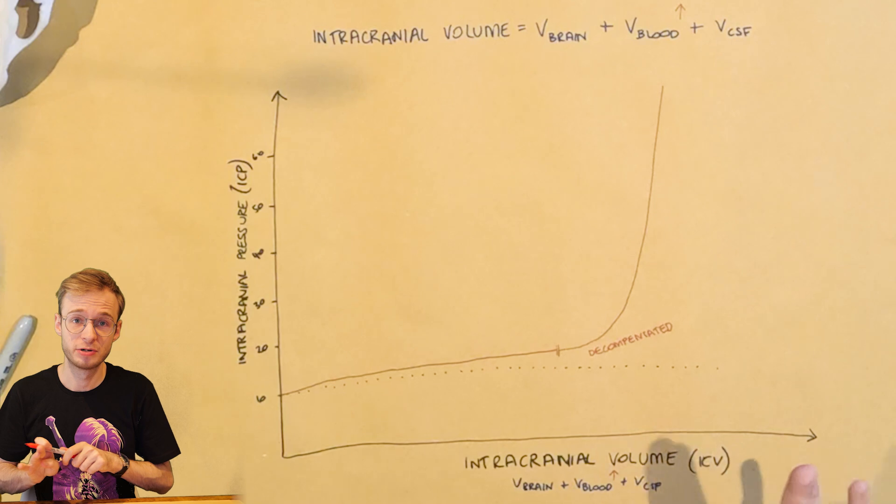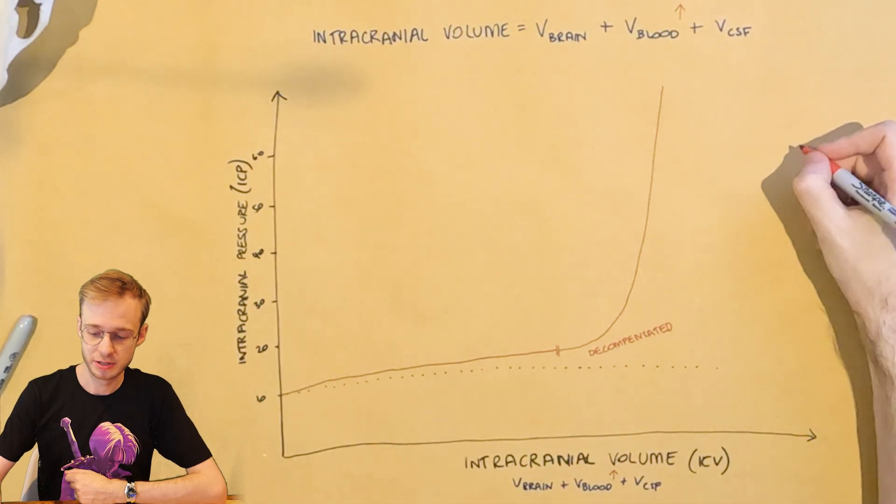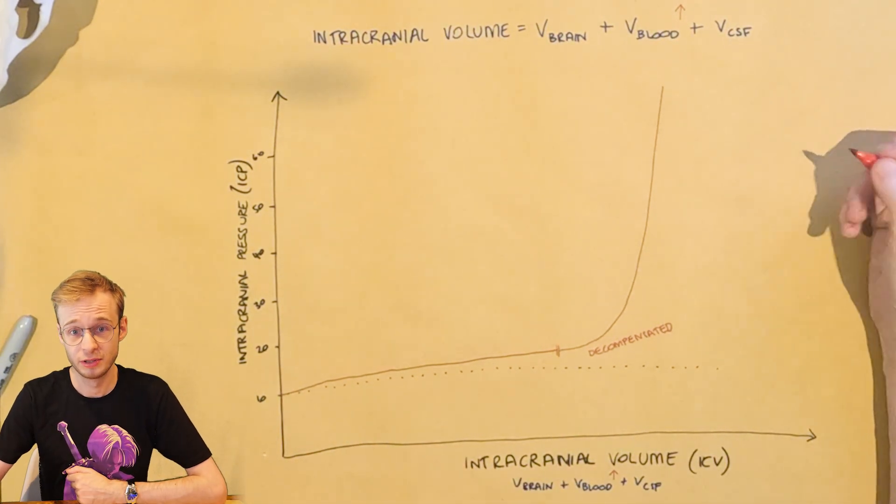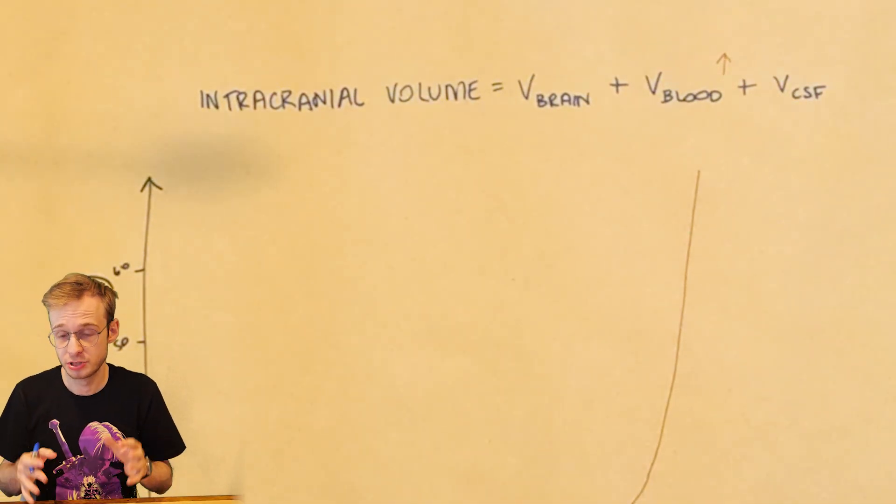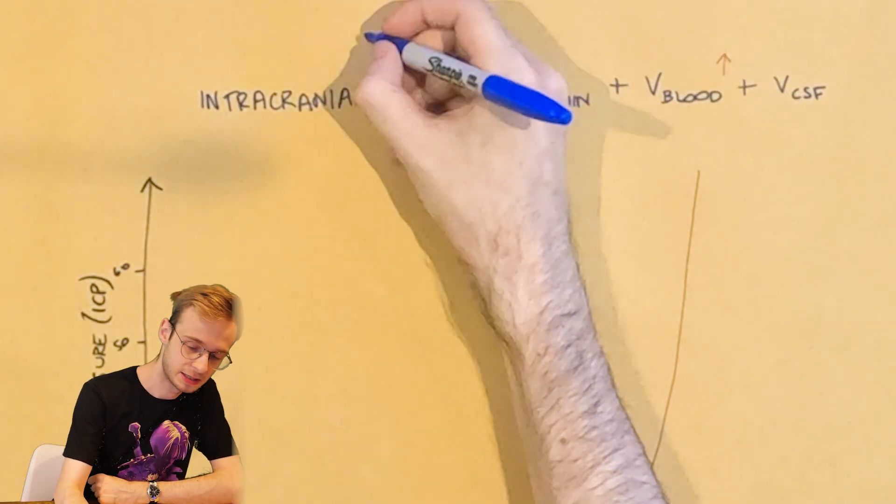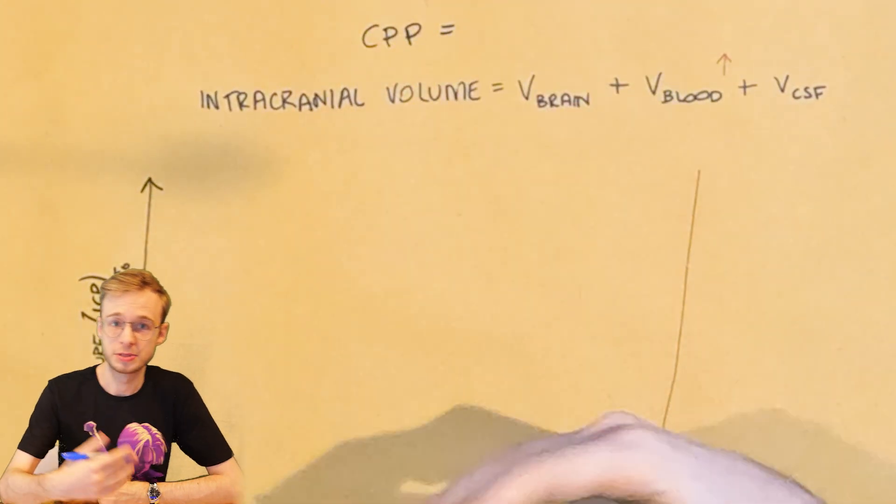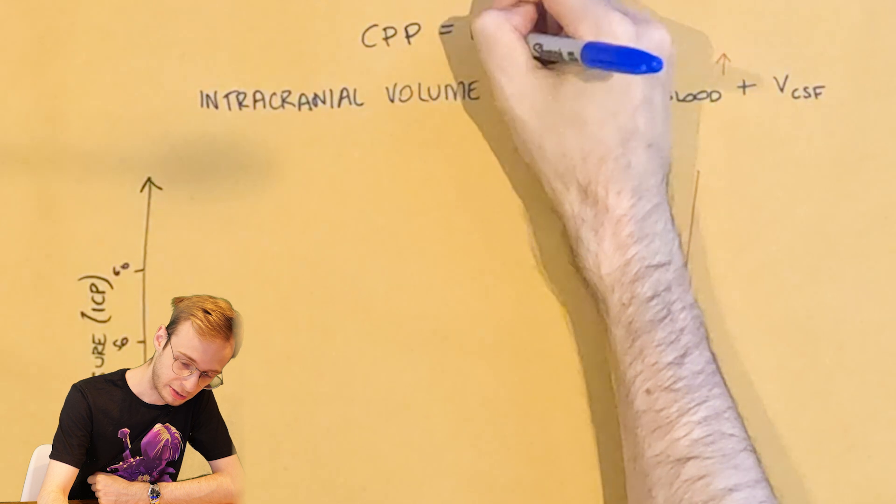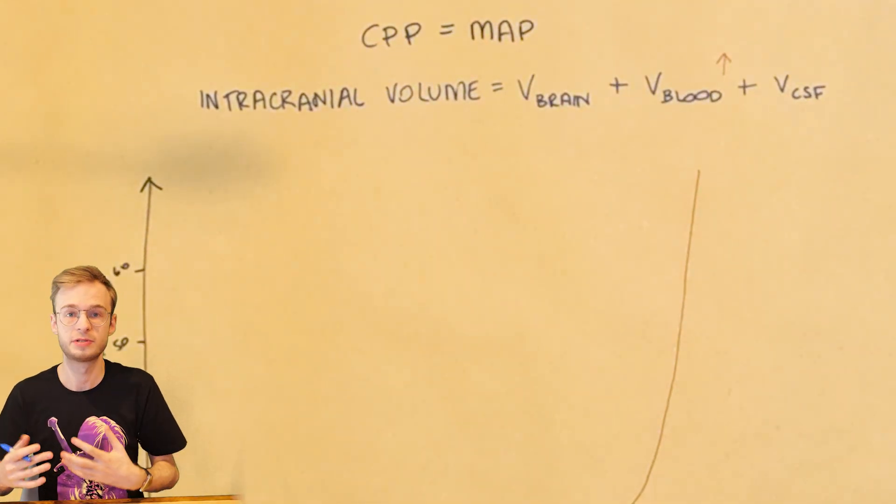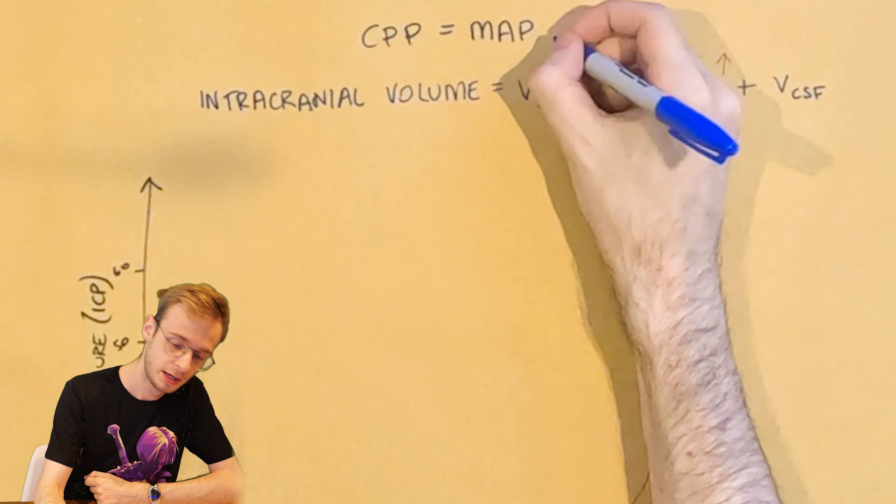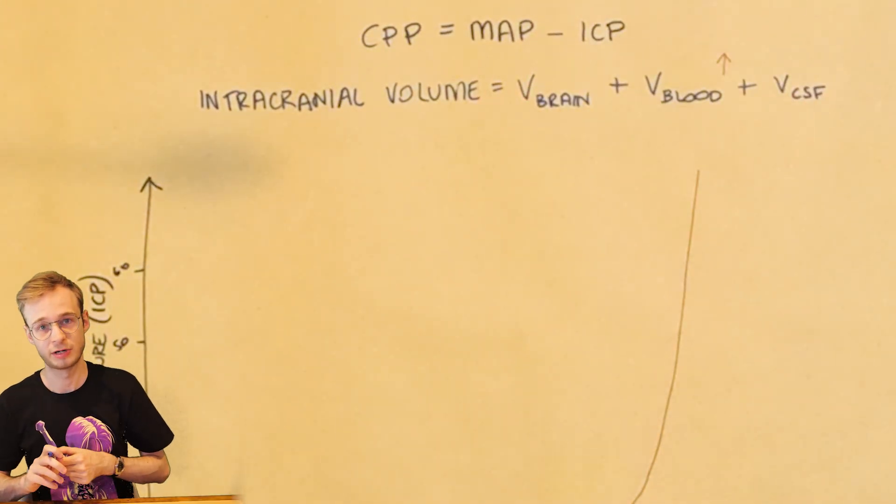One is that this process affects cerebral perfusion pressure, CPP, and there is an equation that is very important. Cerebral perfusion pressure is the ability to supply our brain with oxygen, and there is an equation for calculating it, so we'll add it up here. Cerebral perfusion pressure equals the mean arterial pressure, the pressure at which blood is being pumped around our systemic circulation, minus ICP, or intracranial pressure.